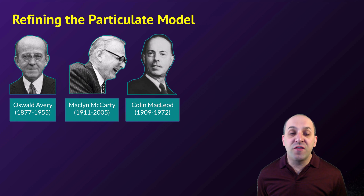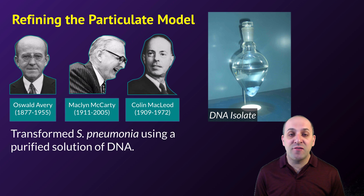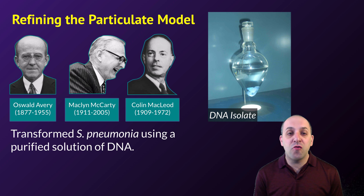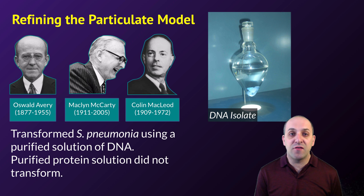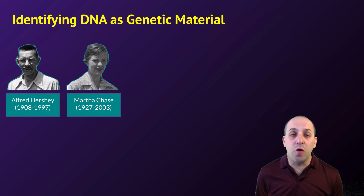Later in the 20th century, Griffith's work was refined by Avery, McCarty, and McLeod. What they did was isolate purified S strain protein and purified S strain DNA and use those to carry out transformation experiments. They found that they could transform R strain bacteria into S strain bacteria using a purified solution of S strain DNA. But when they tried using a purified solution of S strain protein, it did not work, suggesting that it was DNA and not protein that was the transforming agent and the molecule of inheritance.